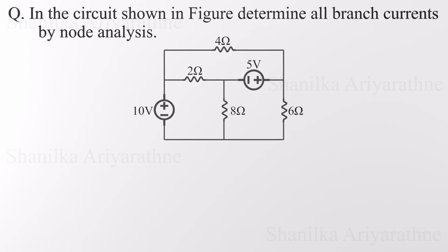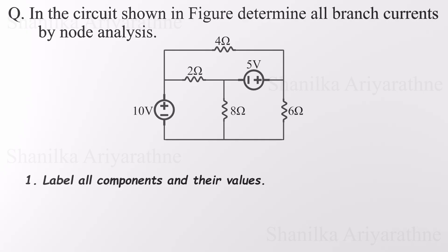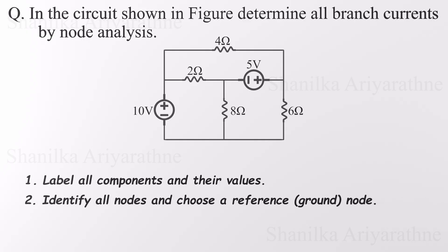First things first, we need to label all the components and values in the circuit. Everything here is already nice and tidy, so step one is already checked off. Moving on to step two: we identify all the nodes in the circuit and choose one to be our reference node, also known as the ground.